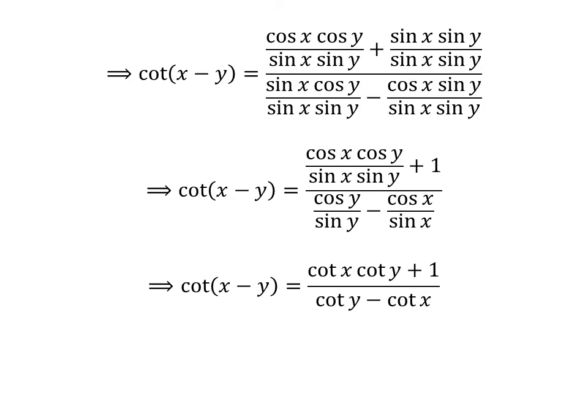As we know, cosine of x upon sine of x is cotangent of x and cosine of y upon sine of y is cotangent of y.